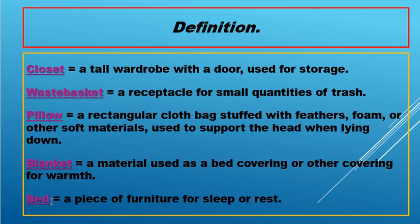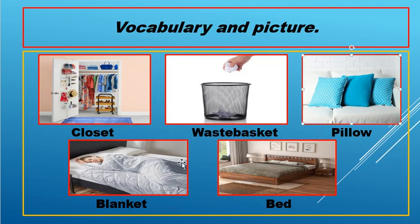Next, bed. A piece of furniture for sleep or rest. So this is a thing — furniture. When we say furniture, that is the thing inside your house that we use for sleeping or rest, to make us relax. So pillow, blanket, and bed — these are partners.